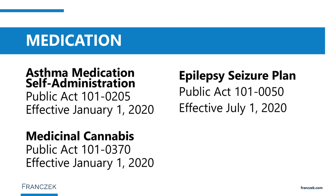The next law is the Seizure Smart School Act, which sets up guidelines and requirements for schools to have a seizure action plan for students, similar to plans for students with diabetes. Parents provide instructions from their doctor, and the school develops a plan to support the student, including a delegated care aide. All school employees must have training on seizure recognition, first aid, and emergency response protocols.